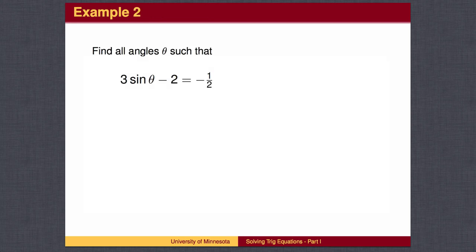We may need to use some algebra skills like solving linear equations. Sine of θ is a number which varies depending on the input angle. Think of sin(θ) as a variable like x. The equation is similar to the equation 3x minus 2 equals negative 1 half.